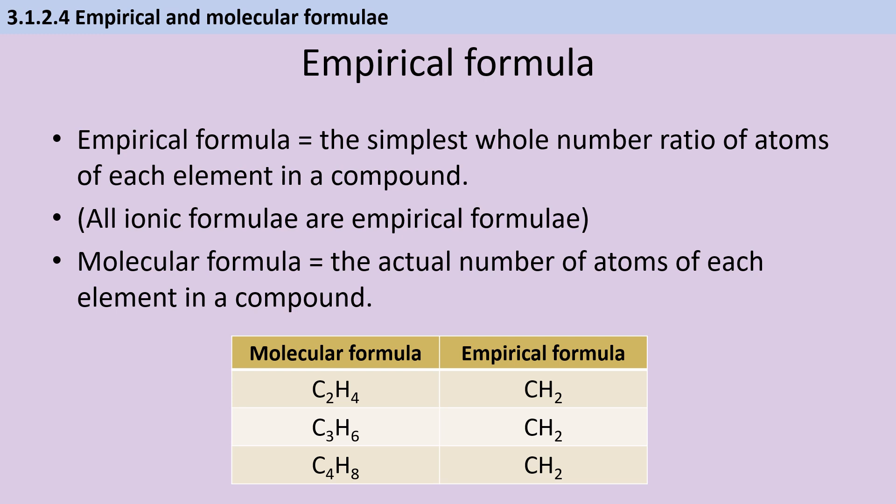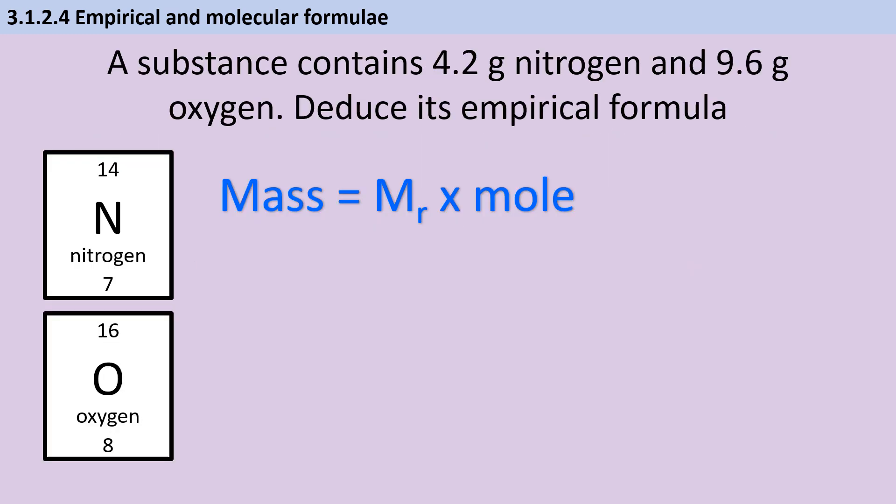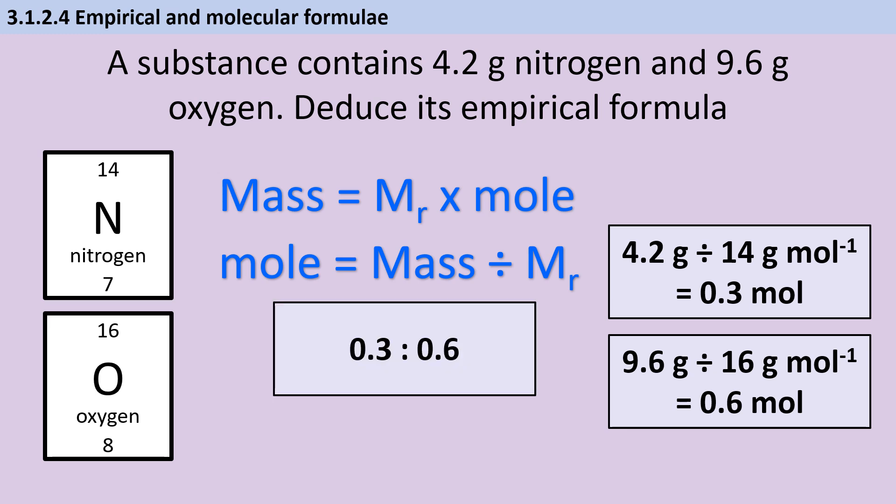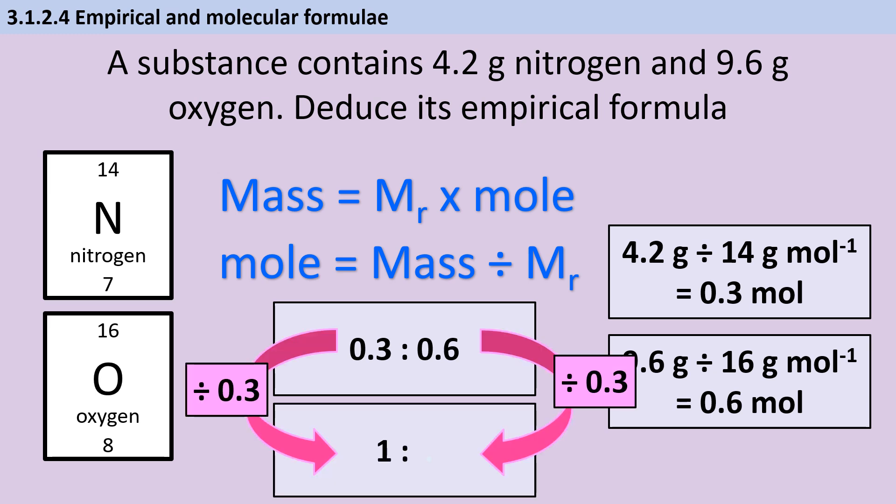Empirical formula is the simplest whole number ratio of atoms of each element in a compound. Ionic compounds have a formula that is already an empirical formula, but for a molecular substance it may or may not be the same thing. For instance, all alkenes have an empirical formula of CH2. To calculate empirical formula from mass data, we're going to start off by using mass = Mr × mole to work out how many moles of each element we have. You rearrange the equation and then we work out that we've got 0.3 moles of nitrogen and 0.6 moles of oxygen. Then we put those together in a ratio and we need to convert this to the simplest whole number ratio, which we do by dividing by the smaller of the two numbers. I divide the left side by 0.3 and then the right side. Don't fall into the trap of dividing both sides by themselves because then you'll just get a one-to-one ratio. This gives me an answer of one to two, and then I need to express my answer as an actual molecular formula, which here is going to be NO2.